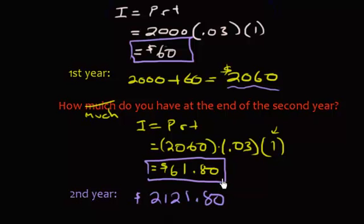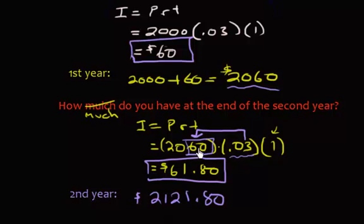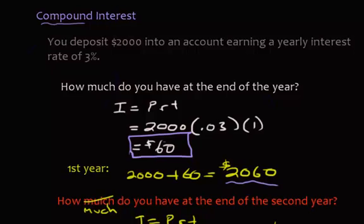This demonstrates the idea behind compound interest. We had $60 in the first period, and the next time we earned a little bit more — because we took 3% not just of $2,000 but of $2,060. We took interest on top of the previous interest. The more times you compound, the more you earn each time. Now if you needed this after 40 years, you'd have to repeat that process 38 more times, but fortunately we have a formula.